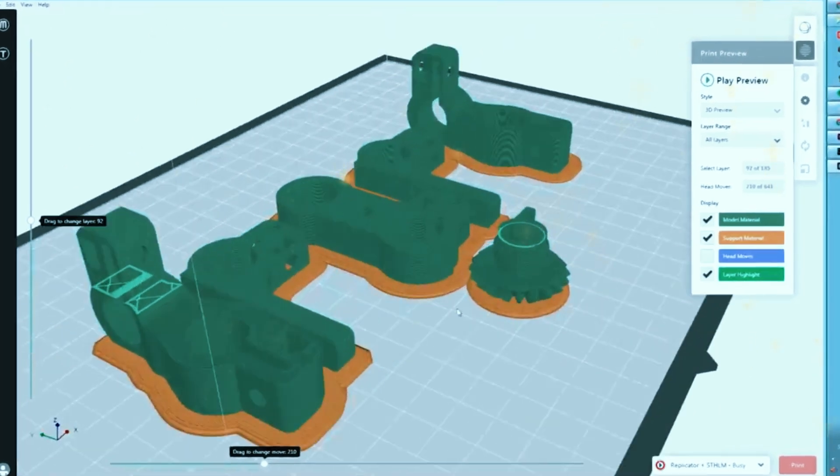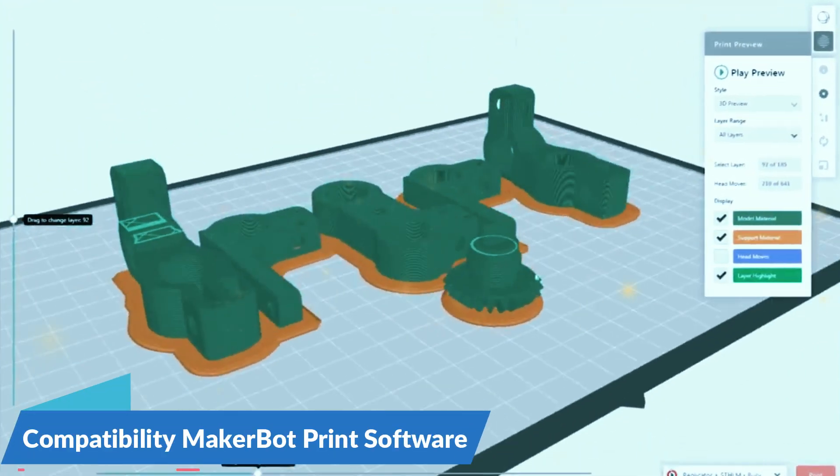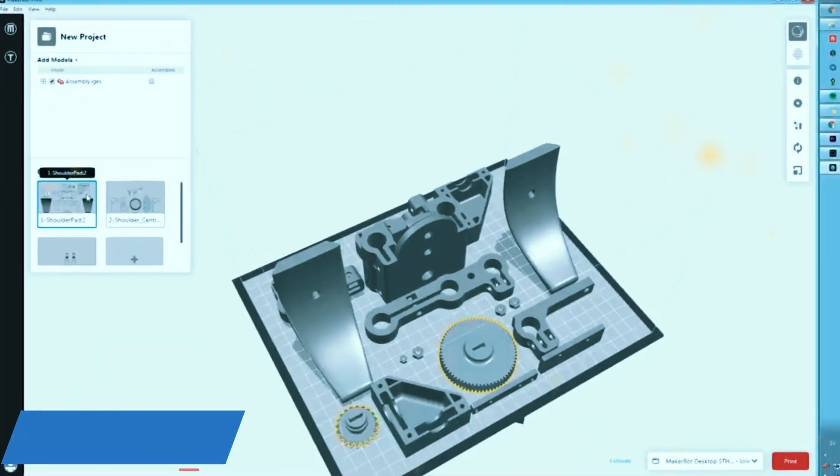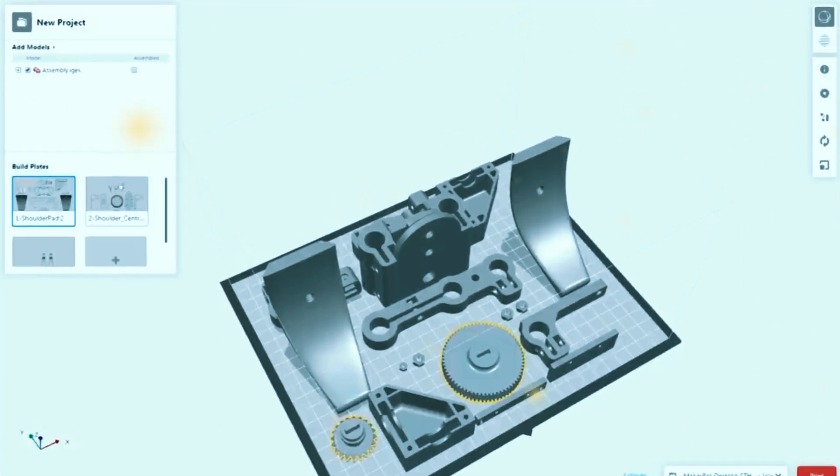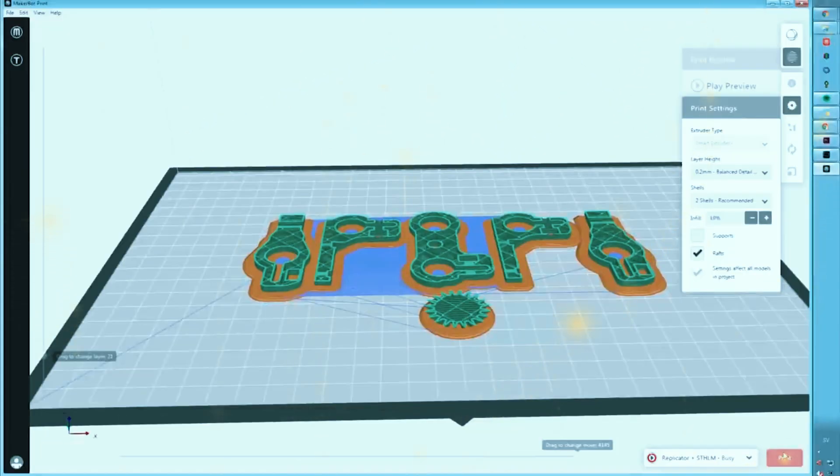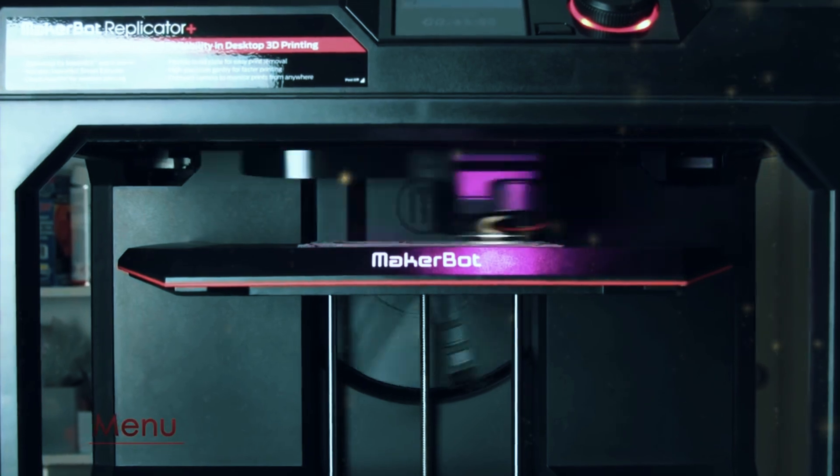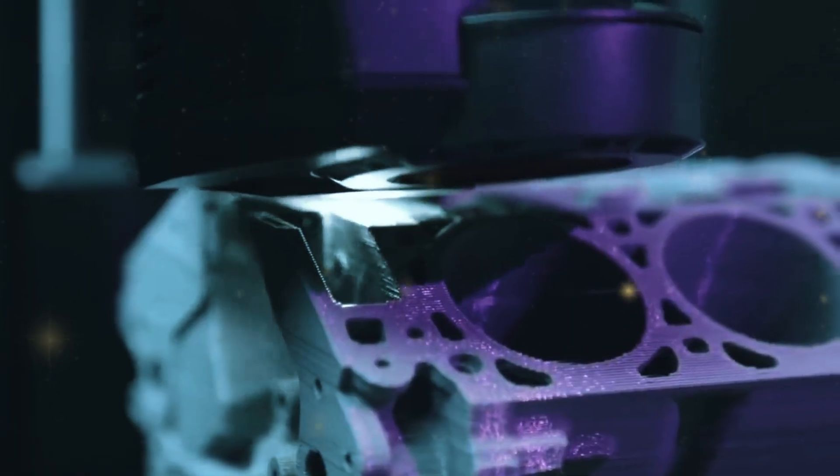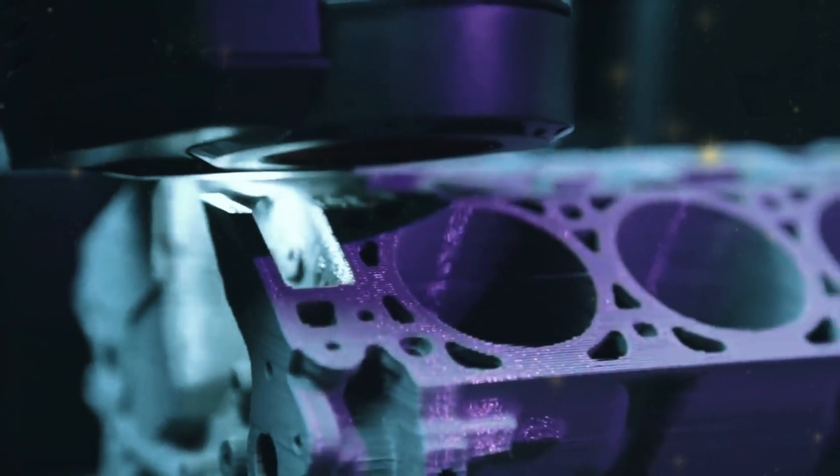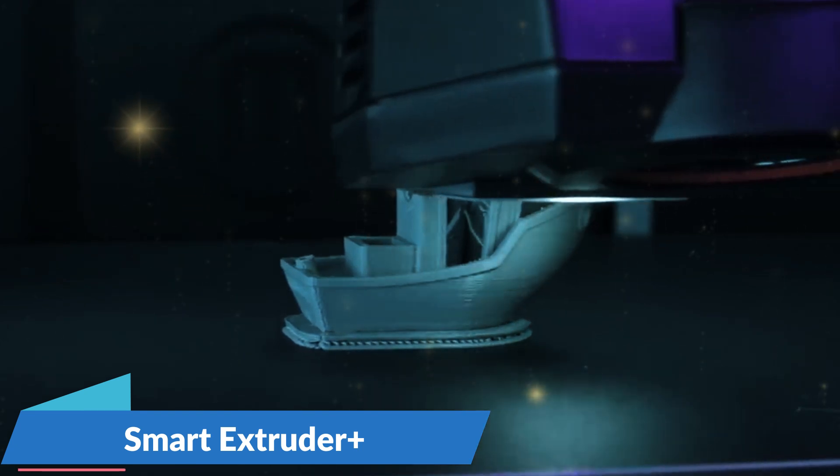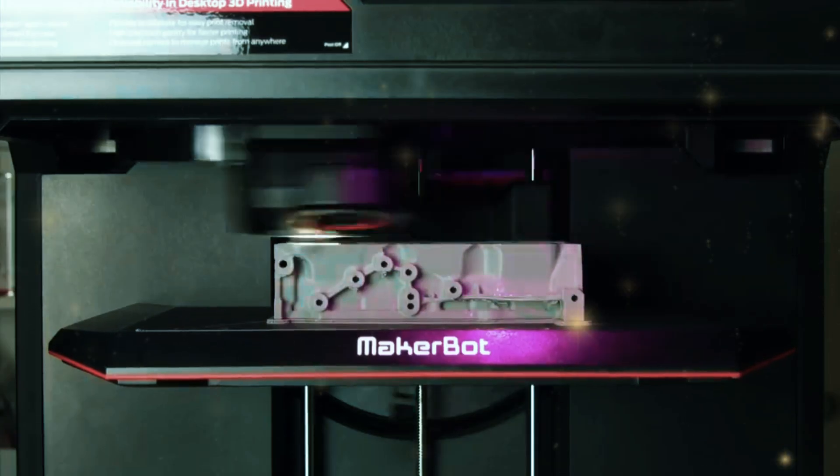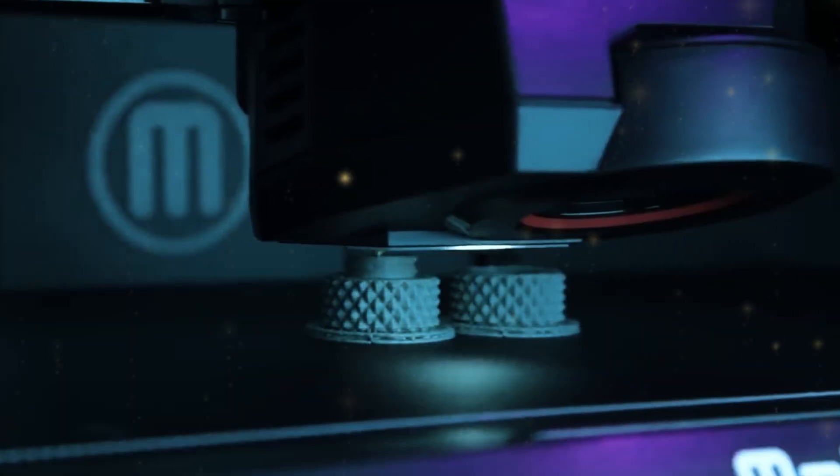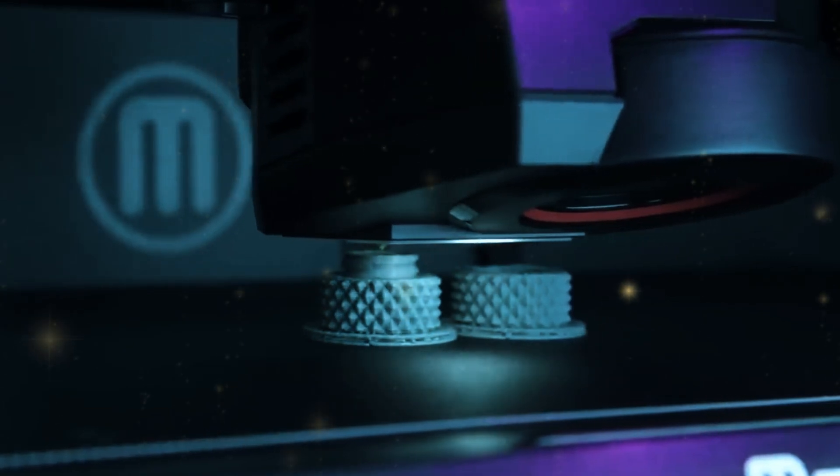One of the standout features is its compatibility with the MakerBot print software, which optimizes print settings with just a few clicks. This software is designed to work seamlessly with the MakerBot Replicator Plus, making it easier than ever to bring your ideas to life. The Smart Extruder Plus is another highlight, offering improved performance and longevity. With this extruder, you can expect hundreds of hours of reliable printing before needing a replacement.